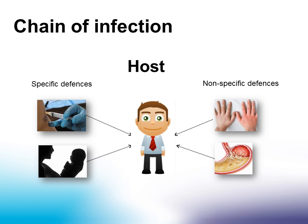The final component of the chain of infection is the host. The host has a number of defences that help provide resistance to infection. Some are specific defences provided by the immune response to a vaccine, previous infection, or maternal antibodies. Other defences are non-specific, such as intact skin, mucous membranes, gastric acids, and normal flora.